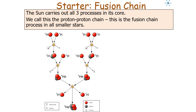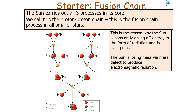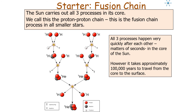Our sun carries out all three of these processes in its core — we call this the proton-proton chain. It's the fusion chain process that occurs in all smaller stars when they turn hydrogen into helium. This is the reason why the sun gives off a tremendous amount of neutrinos every second, because neutrinos are produced in the first fusion event when two hydrogen nuclei are turned into deuterium. It's also why the sun is constantly giving off energy in the form of radiation and losing its mass via the mass defect principle. All three processes happen very quickly after each other in the core, but it takes about 100,000 years for the energy to travel from the core to the surface.